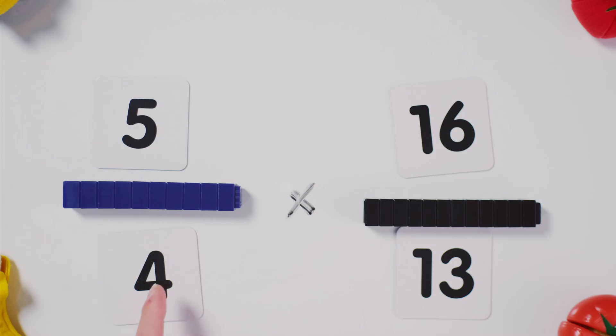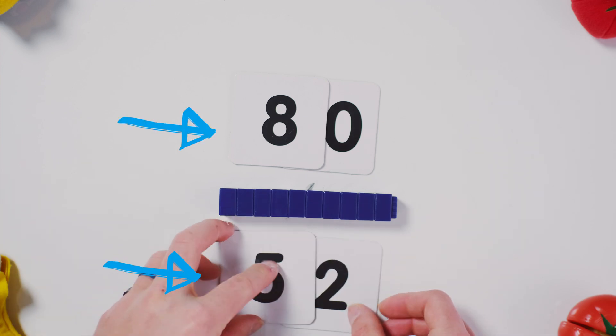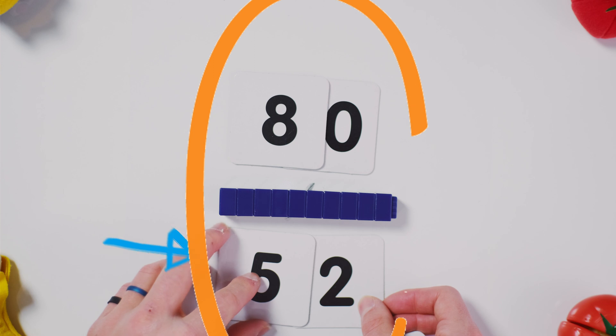Five fourths by sixteen over thirteen. Go straight across. Numerators, denominators, five by sixteen, that's gonna give us eighty over fifty-two.